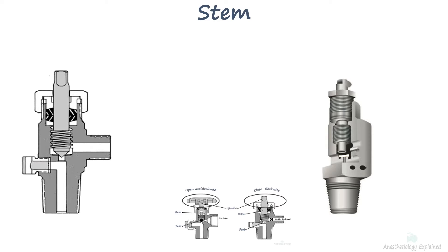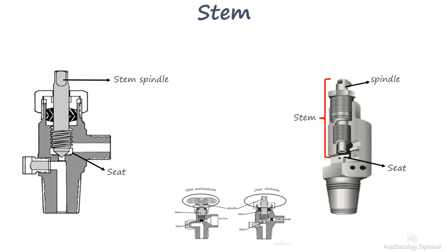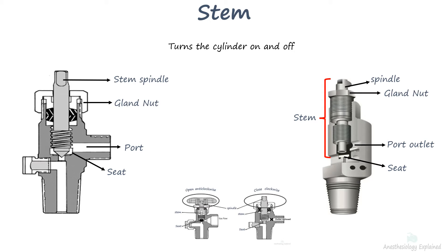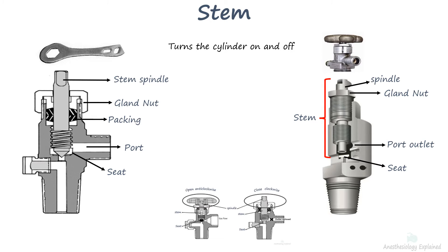Each valve has a stem, which is in close proximity to the seat. Together, they function as a door to the port, enabling the cylinder to be turned on and off. To ensure a reliable seal, the gland nut is meticulously tightened to compress the packing against the spindle. The stem can be manipulated for on/off control using its spindle, where either a hand wheel or a wrench can be employed.